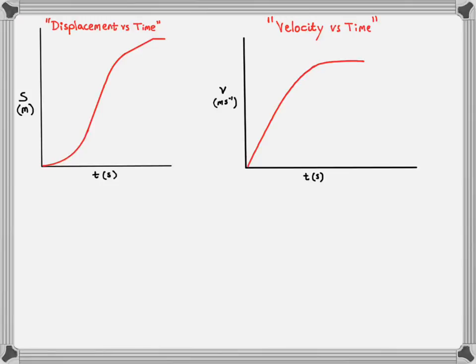He opens his parachute and his velocity rapidly decreases — a steep drop over a short amount of time. Then he reaches a new, lower terminal velocity: another flat straight-line region, until he hits the ground and his velocity goes to zero.